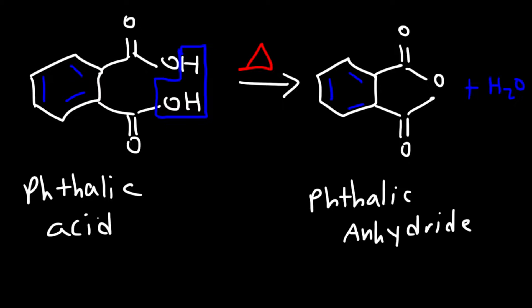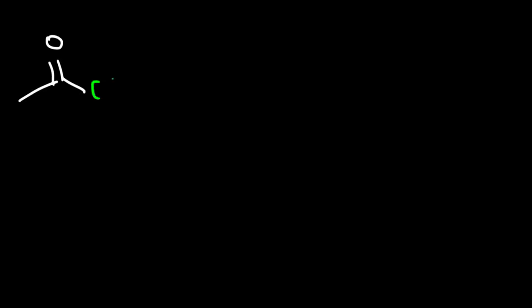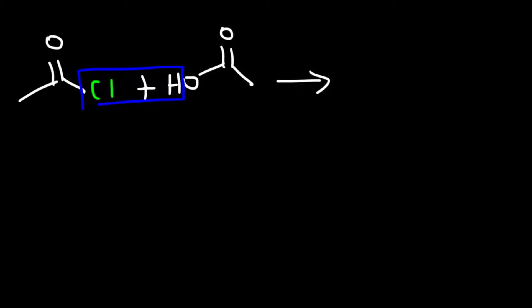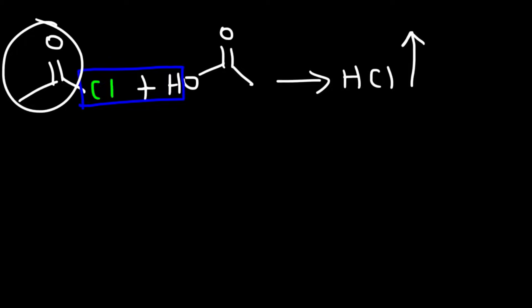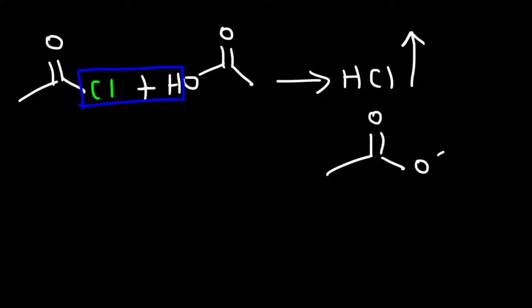Another way to make an anhydride is by reacting an acid chloride with a carboxylic acid. In this case, HCl is the byproduct. This reaction is favorable because at room temperature HCl is a gas, so it leaves the solution, decreasing the concentration of a product and driving the reaction to the right by Le Chatelier's principle. Combining the two reactants gives the main product: ethanoic anhydride.